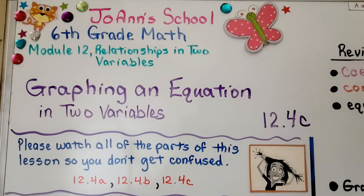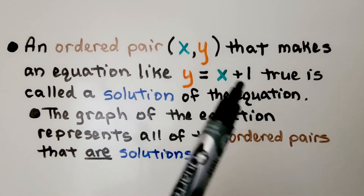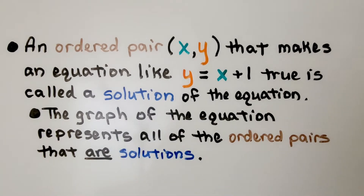Lesson 12.4c, graphing an equation. These are going to be equations in two variables. An ordered pair (x, y) that makes an equation like y equals x plus 1 true is called a solution of the equation. The ordered pair that makes this equation true is the solution of the equation. The graph of the equation represents all of the ordered pairs that are solutions.